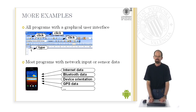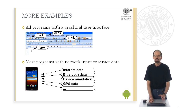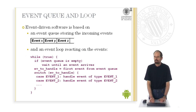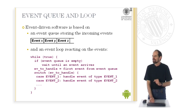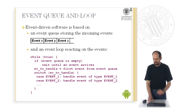More programs are also event-driven. All programs with a graphical user interface, and other programs that get network input or sensor data like internet data, Bluetooth data, and so on, react upon these events by executing reaction programs. Event-driven programming needs two things: first, an event queue, and second, an event loop. In the event queue you store the incoming events, and in the event loop you react on them. The event loop is an endless loop which waits until some event arrives, then checks what type of event it is and reacts upon that specific type. So we have a big switch-case statement which has for each event type one case line.